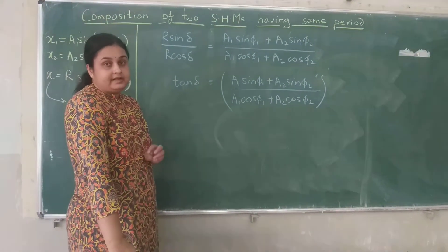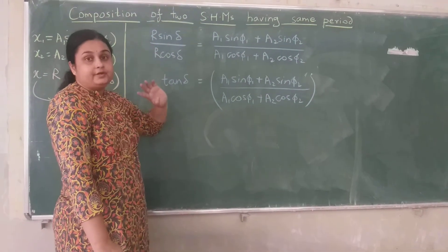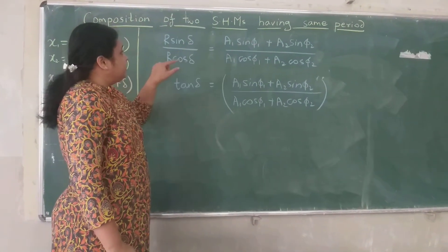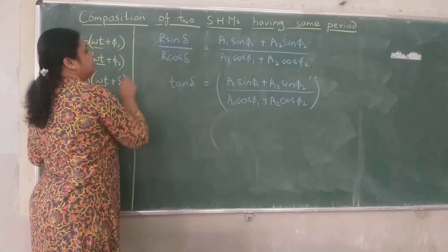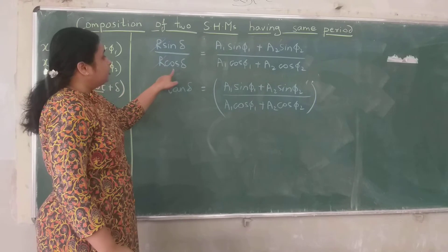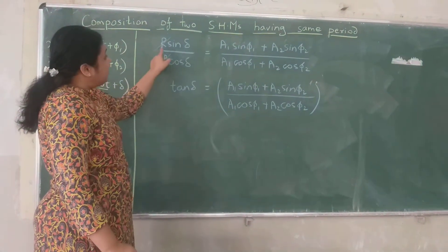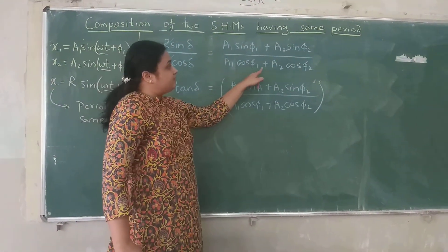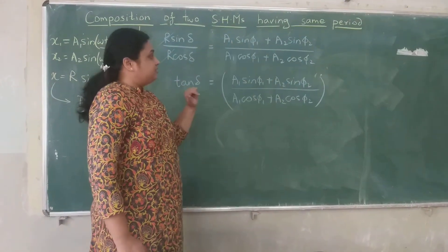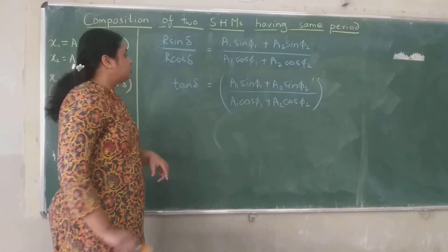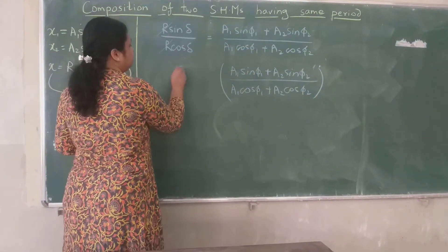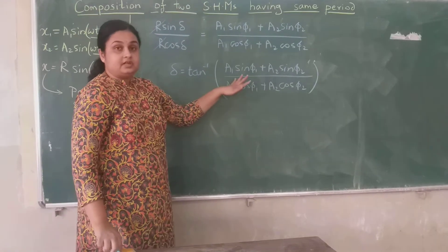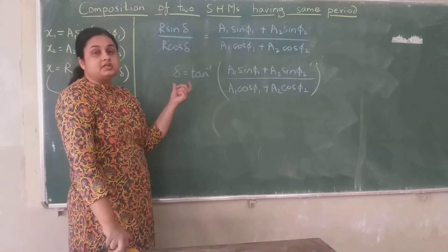Now we will find δ. To eliminate R, we take the ratio of the two equations: R sin δ / R cos δ = tan δ. So tan δ = (A₁ sin φ₁ + A₂ sin φ₂) / (A₁ cos φ₁ + A₂ cos φ₂). Therefore δ = tan⁻¹ [(A₁ sin φ₁ + A₂ sin φ₂) / (A₁ cos φ₁ + A₂ cos φ₂)]. Again, these are all constant terms, so δ is also a constant and does not change with time.